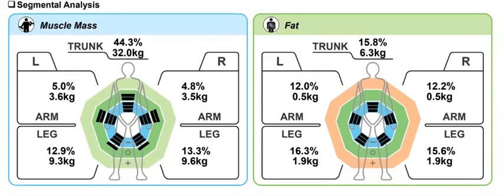Then we look at the segmental analysis — this is comparing left to right arm and left to right leg. In this case it's absolutely dead on, so we've got very little difference between the left and right side, and equally the fat distribution is absolutely spot on.